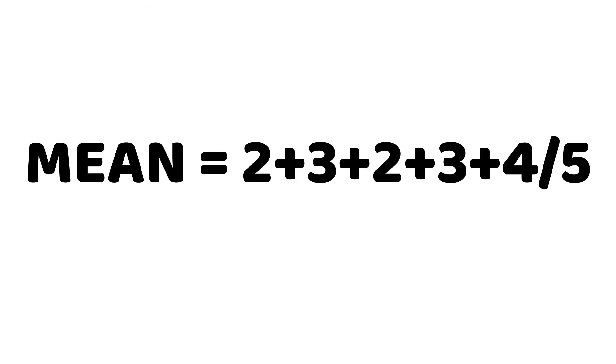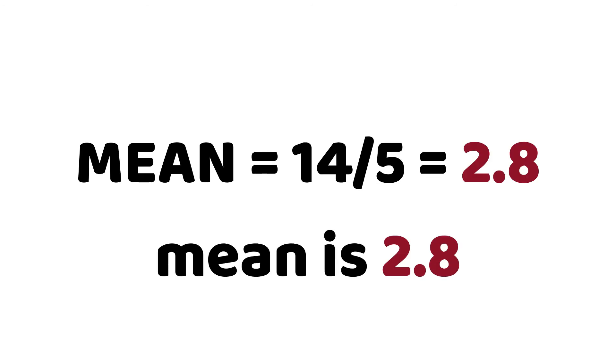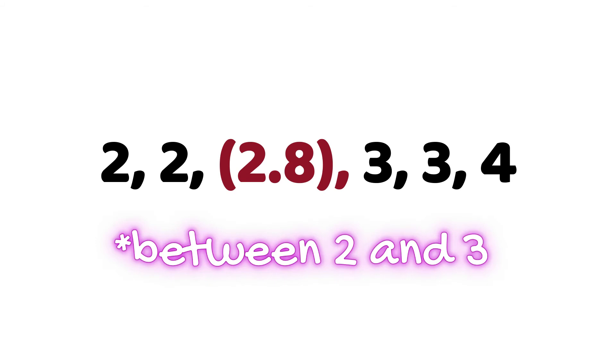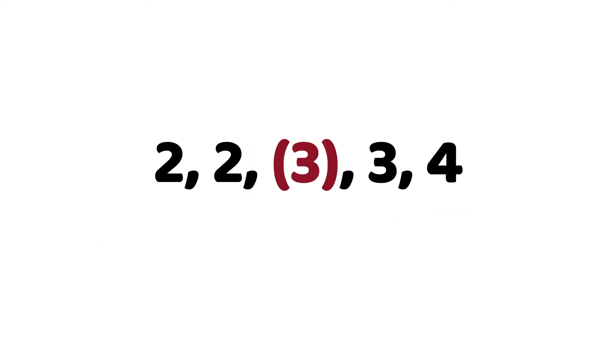Let me give a simple example to prove that the mean can act as the center. Suppose we have five data points: 2, 3, 2, 3, and 4. The mean is (2+3+2+3+4) ÷ 5 = 2.8. Rearranging in ascending order gives: 2, 2, 3, 3, 4. When you position 2.8 within this data set, you see it falls between the two threes — approximately 3 — confirming that 2.8 is located at the center of the data set.